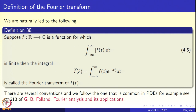There are several different conventions for the Fourier transform. Some books put a 2π factor in the exponent, defining it as ∫f(t)·e^(−2πitχ) dt. Another convention puts a factor of 1/√(2π) in front of the integral. We shall follow the convention common in the theory of partial differential equations, for example G.B. Folland's book on Fourier analysis and its applications, page 213.